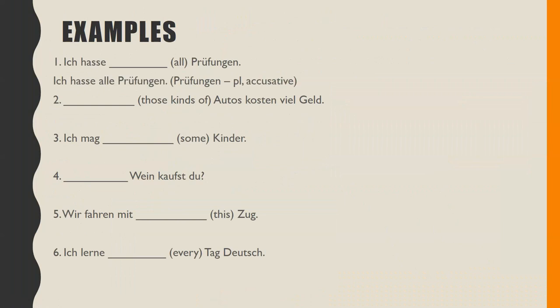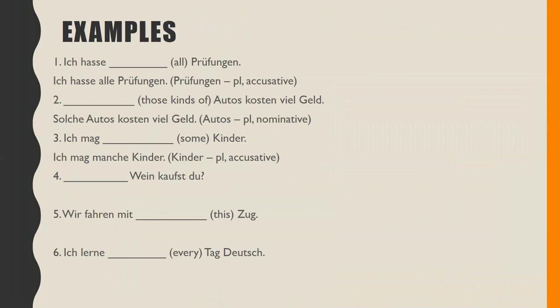You should have 'Ich hasse alle Prüfungen.' 'Prüfungen' is plural and accusative — that's how we found our ending. 'Solche Autos kosten viel Geld.' 'Autos' is plural and nominative. If you thought it was neuter, it's because you didn't notice the S at the end. 'Ich mag manche Kinder.' 'Kinder' is plural and accusative.